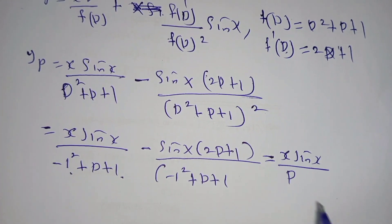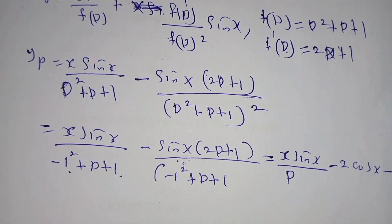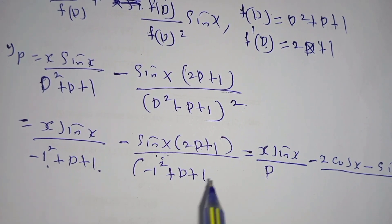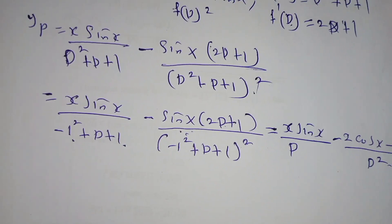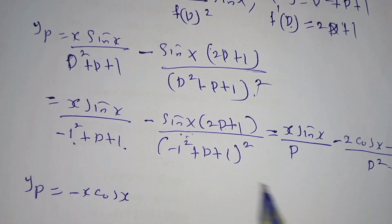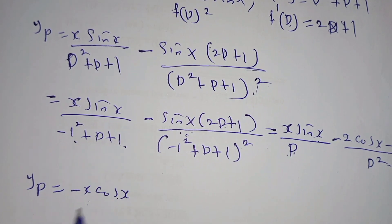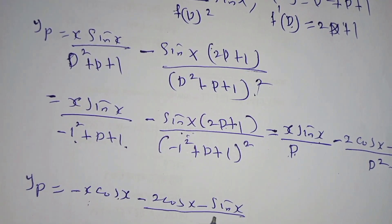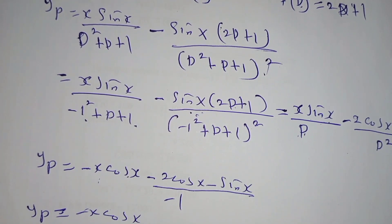Simplifying: x·sin(x) over 1, which is x·sin(x), then minus — differentiating gives −2·cos(x) — minus sin(x) divided by 1 (the squared term). Integrating sin(x) with respect to x gives −cos(x). So the particular integral equals −x·cos(x) minus 2·cos(x) minus sin(x) over −1, giving: IP = −x·cos(x) + 2·cos(x) + sin(x).